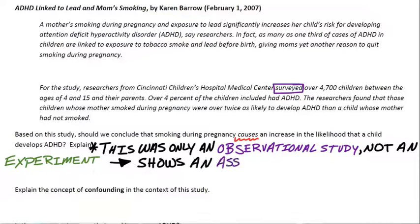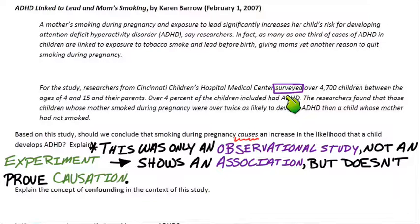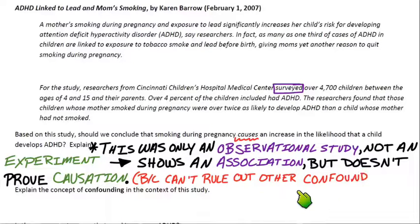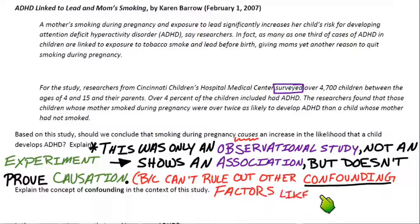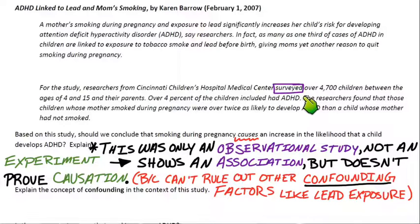So why doesn't it prove it? The study definitely shows an association — these mothers smoked and the children had ADHD — but it doesn't prove causation. It doesn't prove that smoking is the true cause of these kids' ADHD. To actually prove that, you would need to conduct an experiment. We can't rule out other confounding factors — like lead exposure, alcohol, drugs, or heredity. These moms who smoked during pregnancy may have done many other things, so we can't pinpoint smoking as the definitive reason.